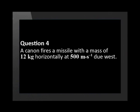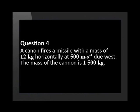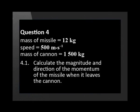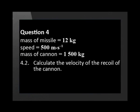A cannon fires a missile with a mass of 12 kg horizontally at 500 m per second due west. The mass of the cannon is 1,500 kg. Calculate the magnitude and direction of the momentum of the missile when it leaves the cannon. Calculate the velocity of the recoil of the cannon.